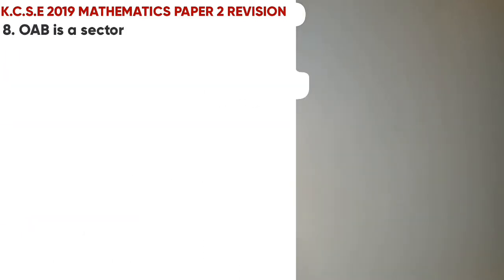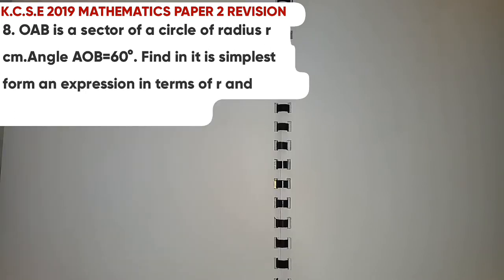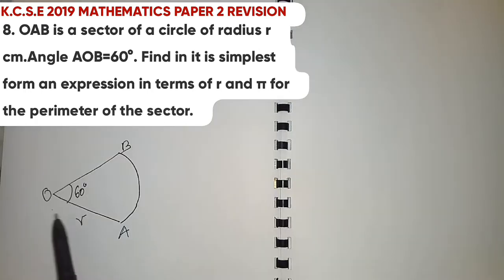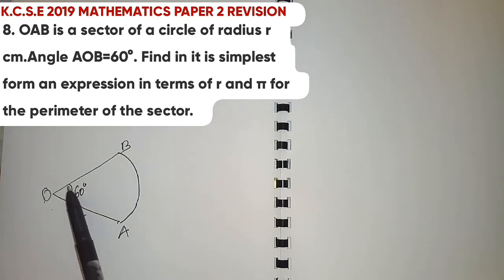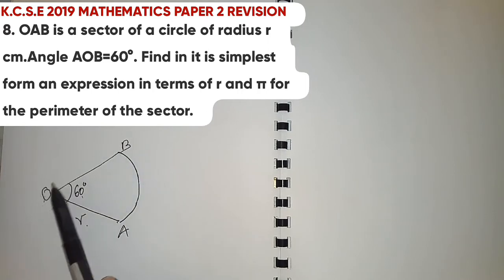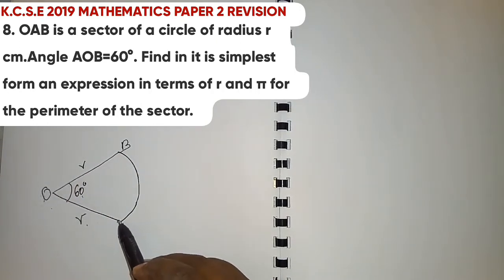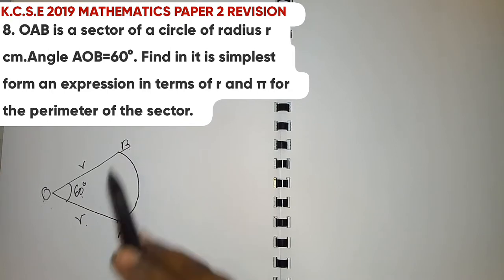Question 8: sector OAB has radius r centimetres and angle AOB = 60 degrees. Express the perimeter of the sector in simplest form in terms of r and π. The perimeter equals the length of arc AB plus OA plus OB. OA and OB are both radii of length r, so we need to find the arc length AB using the formula.